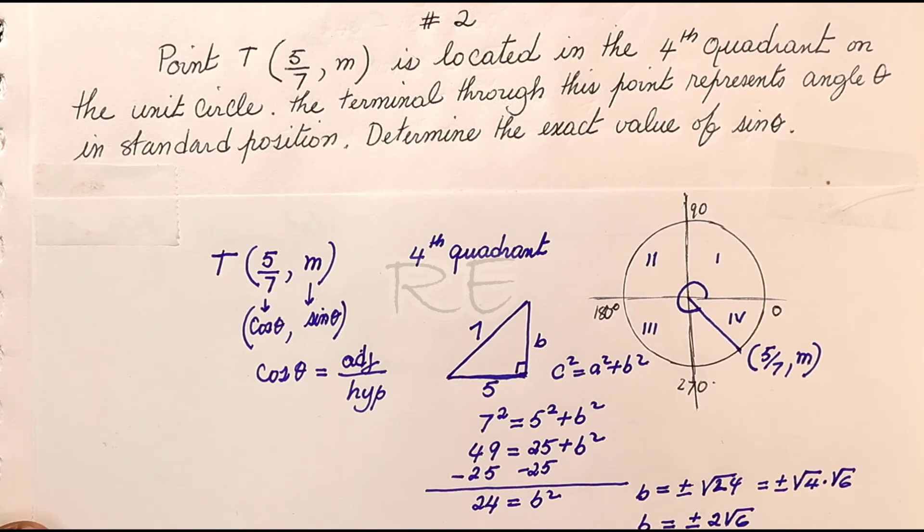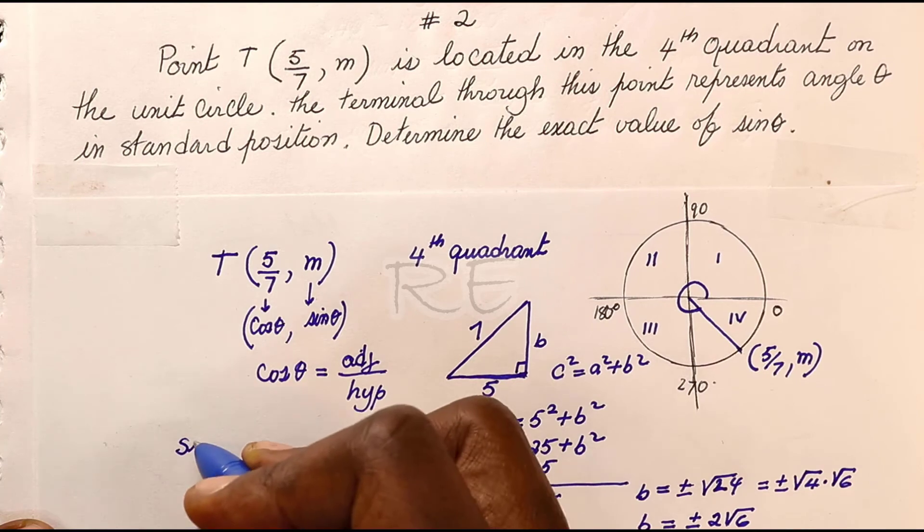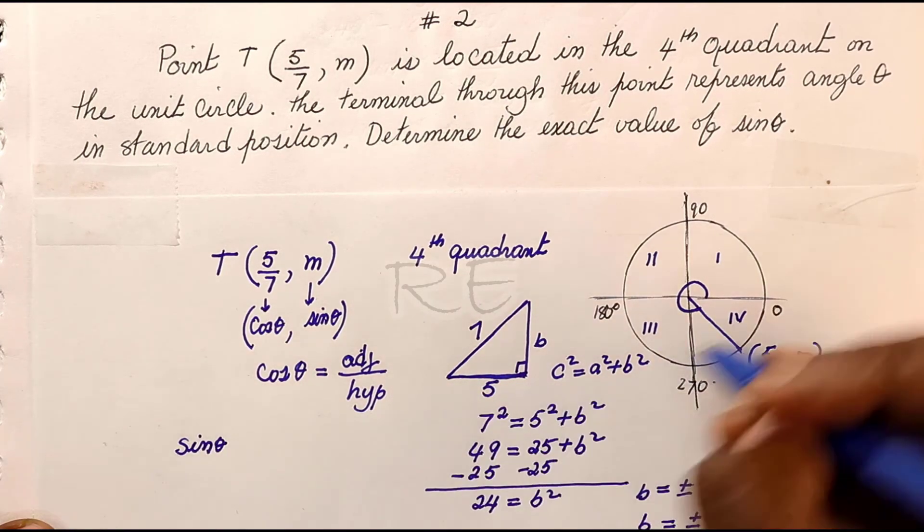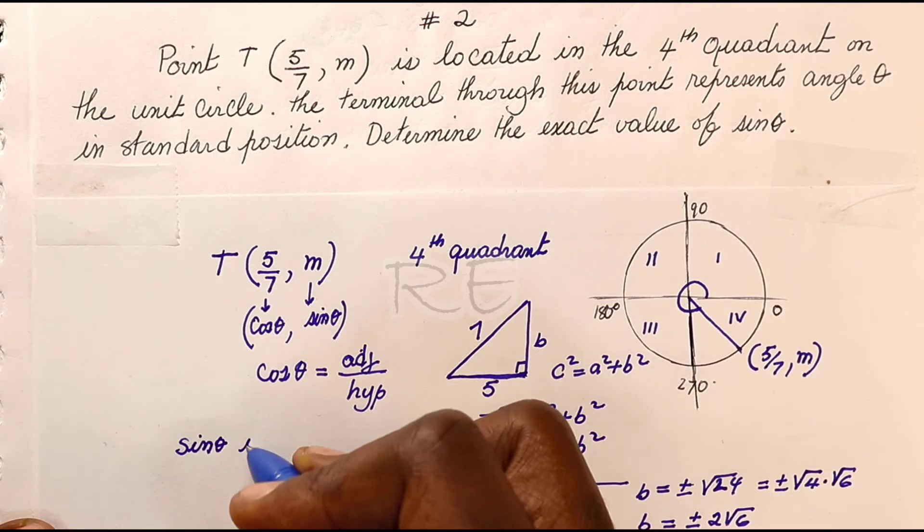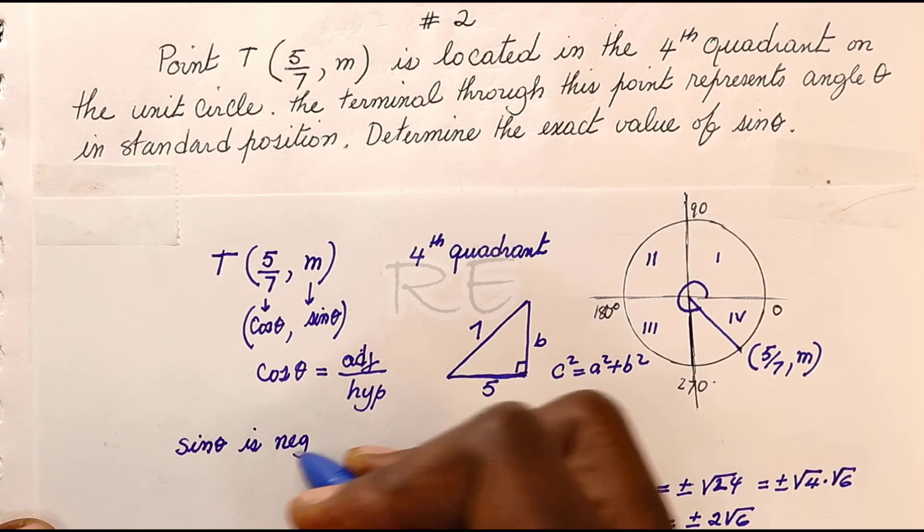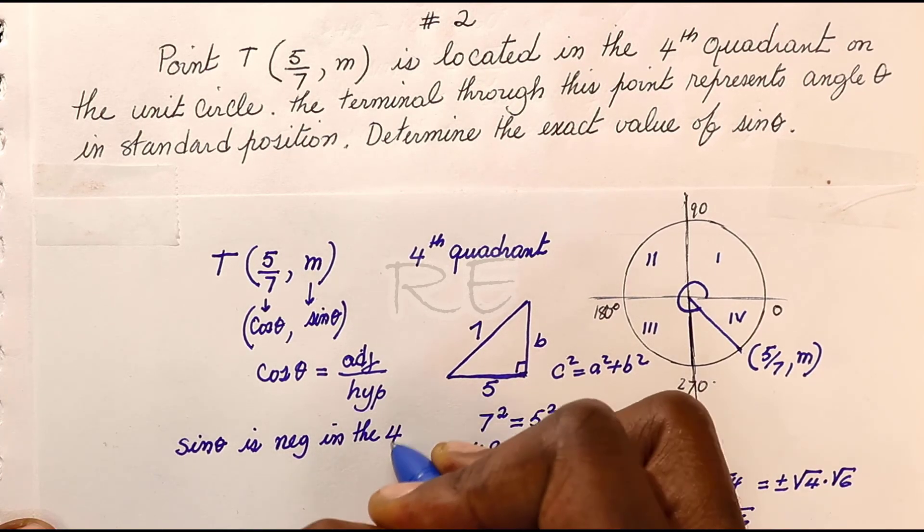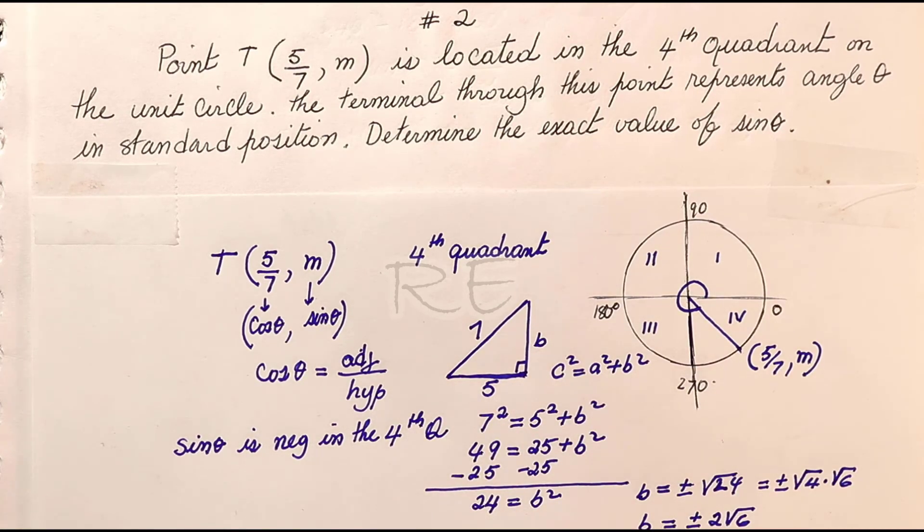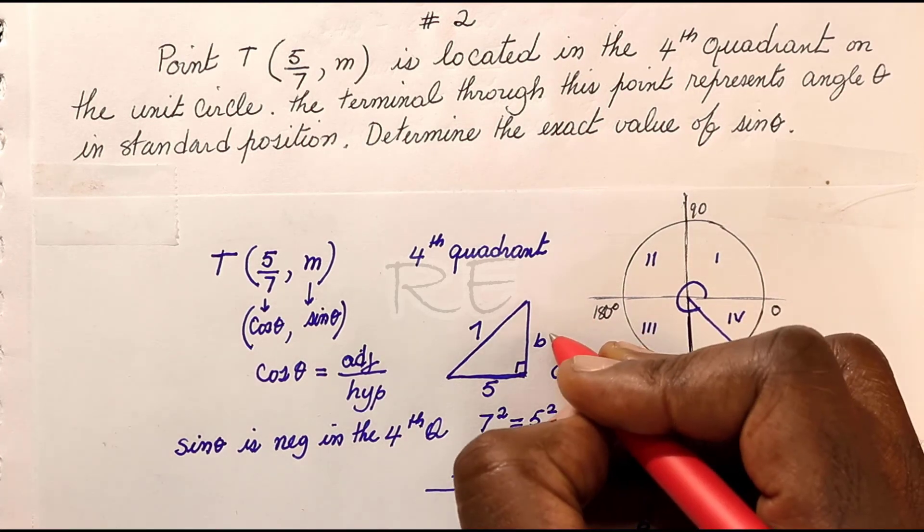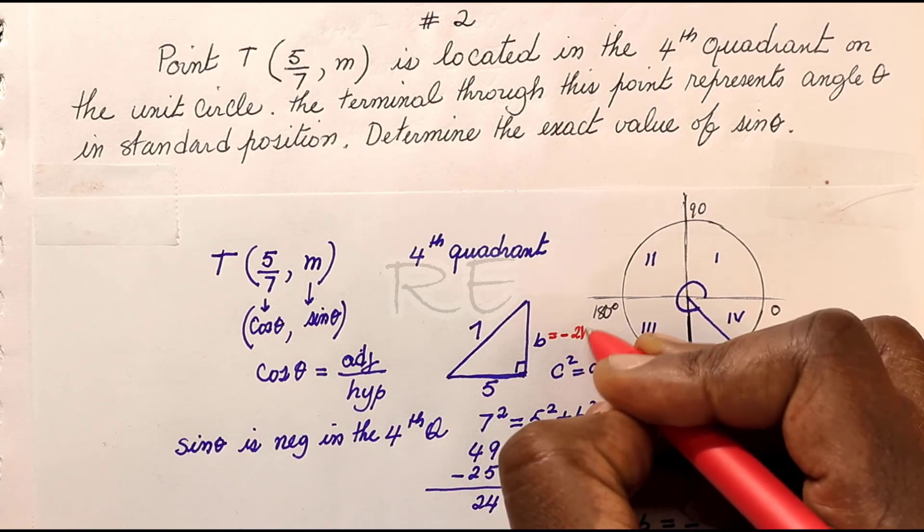Now, if sine theta is in the fourth quadrant, then sine theta is negative. Sine is the Y value, so we'll have to pick the negative value of B. So B should be equal to negative 2 square root of 6.